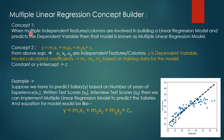When multiple independent features or columns are involved in building a linear regression model, which helps in predicting the dependent variable, that model is known as multiple linear regression. To know when to use simple vs. multiple linear regression: in the earlier salary prediction project, only one independent column was involved — years of experience. But suppose we also have written test scores and interview test scores available.